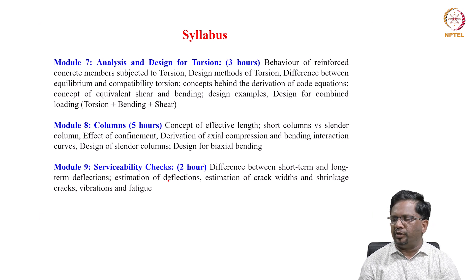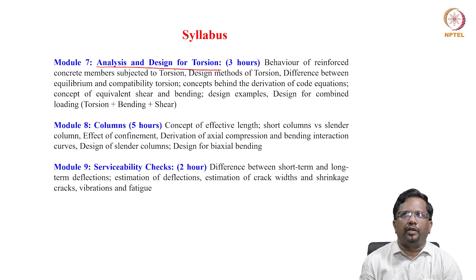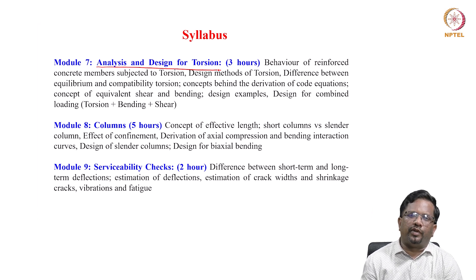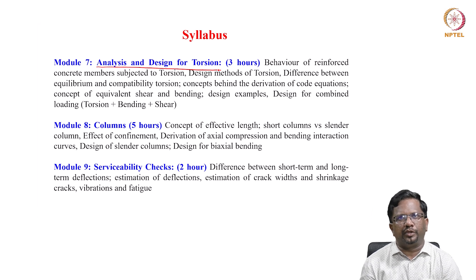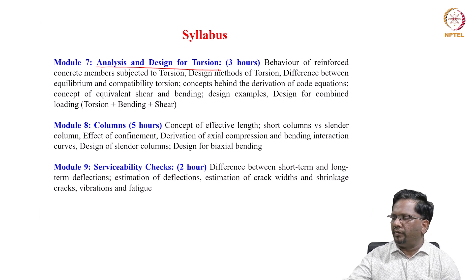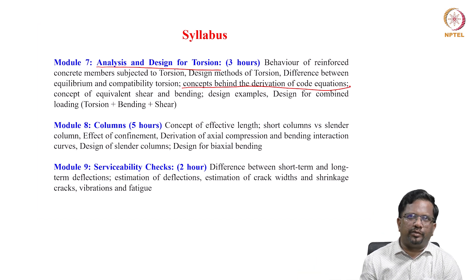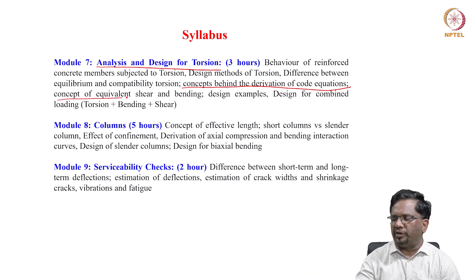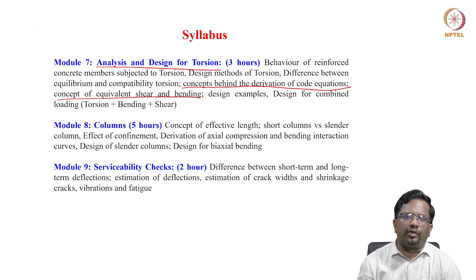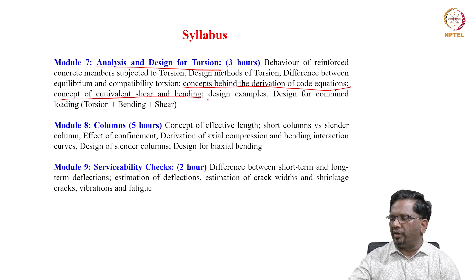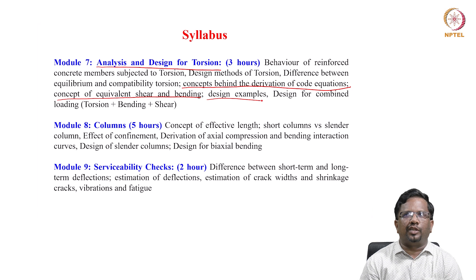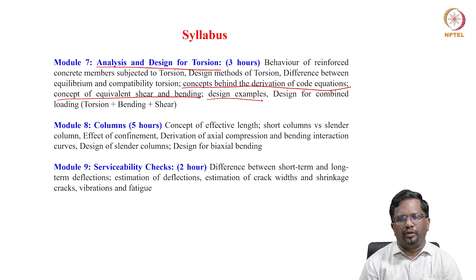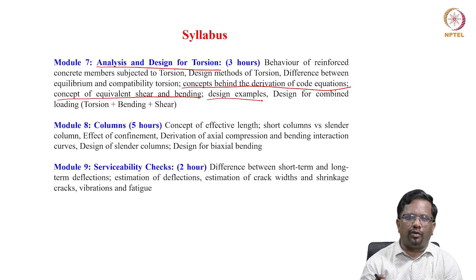Module 7 covers analysis and design for torsion. We will examine how reinforced concrete members behave under torsion and the different design methods available. There are two basic types of torsion: equilibrium torsion and compatibility torsion. We will also look at how code equations are derived, what equivalent shear and equivalent bending are — that is, how torsion can be converted into equivalent shear and bending — and work through an example of designing a section for combined bending, torsion, and shear.